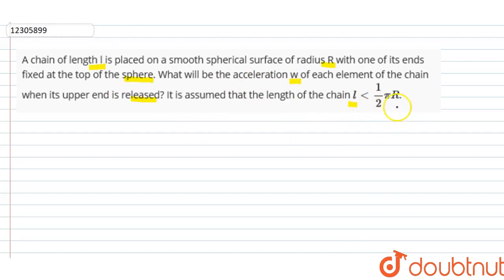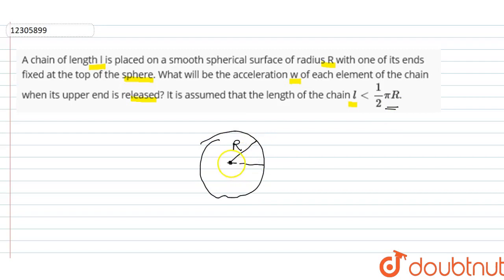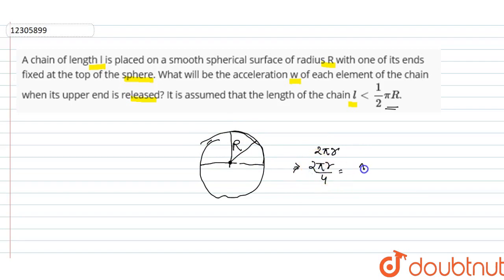What is πr/2? Our sphere has radius r. If we look at the circumference in the 2D plane, this is a circle of circumference 2πr. So a quadrant of the circumference will be 2πr/4, which is πr/2. And L is less than πr/2.